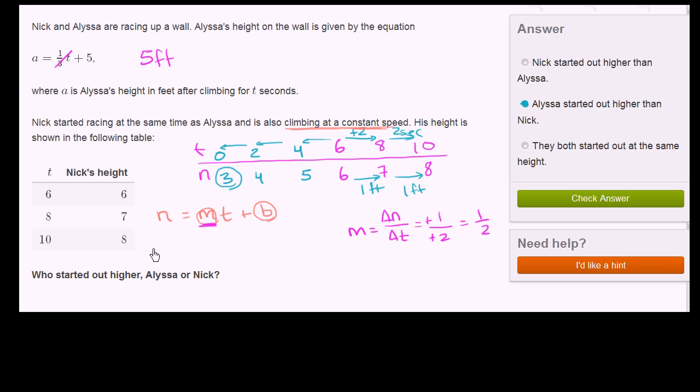So we can fill in m here. So we know now that n is equal to 1/2t plus b. Now, to solve for b, you could just substitute one of these points. All of these points must satisfy this equation right over here. So we could use the point 6. So if we put a 6 in here.